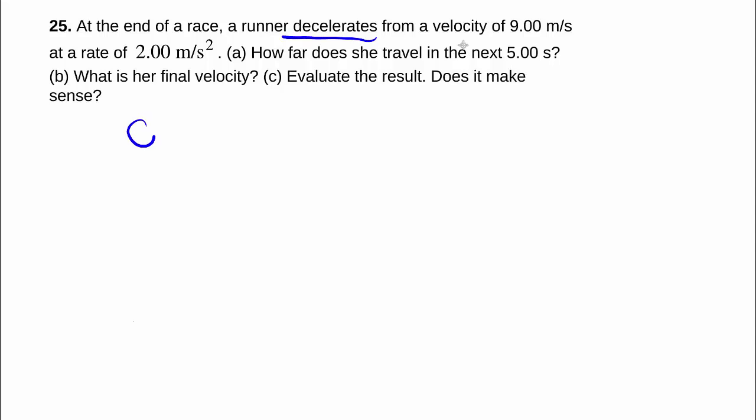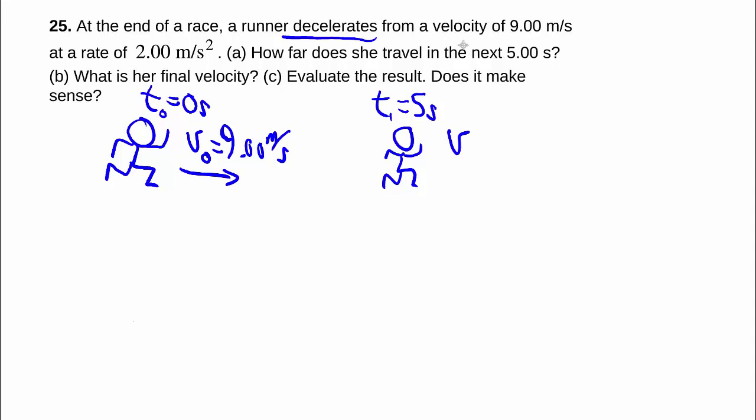So what do we have? We actually have this time a person running already initially. It's important to note that it's not always the case that your v0 will be 0. So we'll call this time0 and just define time equals 0 at this point. So we'll call this v0 and there's an initial velocity going that direction of 9 m per second. A little later, which is at 5 seconds later, we want to know what is the final position and what is the final velocity.